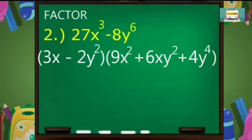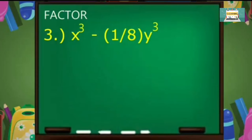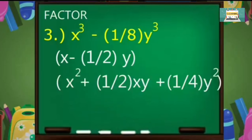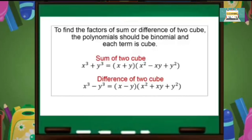For the third example: 27x cubed minus 8y to the 6th. You have to get the cube root of the first and the last term, and that will be your binomial. So we will have the cube root of 27x cubed and the cube root of negative 8y squared. Now let's get the trinomial: square the first term, opposite sign, multiply the two terms, and square the last term. For the last example: x cubed minus 1/8 y cubed. Get the cube root of x cubed, which is x, and the cube root of negative 1/8 y cubed, which is negative 1/2 y. Then get the trinomial: square the first term, opposite sign, multiply the two terms, and square the last term. To find the factors of sum or difference of two cubes, the polynomial should be a binomial and each term must be a cube.